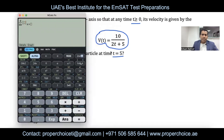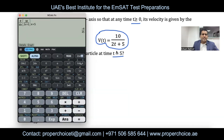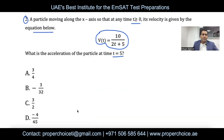In the calculator, access Shift + derivative and type the rational function: 10 / (2·alpha·x + 5), at x = 5. You may be confused because the question uses t, but on the calculator we always type x regardless of the variable. After pressing enter, the acceleration comes out as −4/45, which is option D.